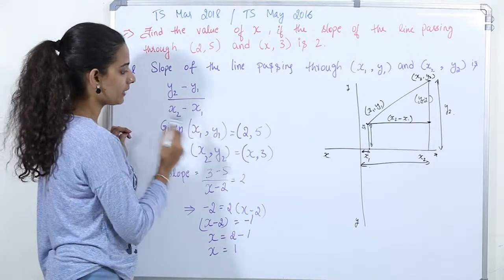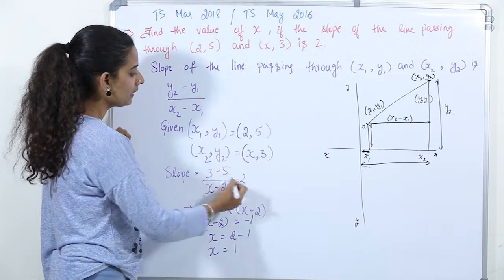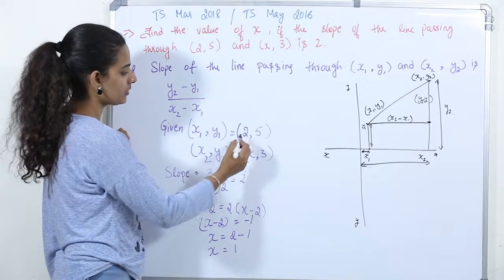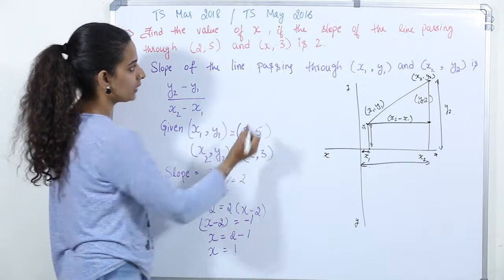So, slope is equal to y2 minus y1. So, (3 minus 5) divided by (x2 minus x1), which is (x minus 2), which is equal to 2.